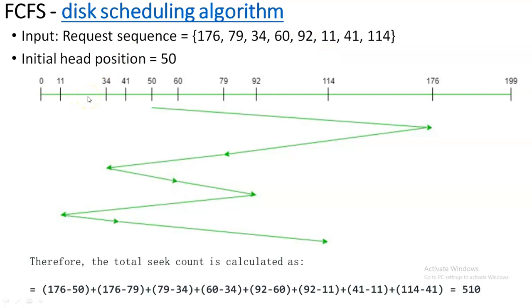So the smallest value is 11, then 34, 41, 50, 60, 79, 92, 114, and 176 — you write them accordingly on the scale. Now you are going to start traveling in the disk, as the arm rotates to read data. The initial point is already given, so you are going to start from 50. The algorithm is First Come First Serve, so you have to look at the request sequence — whichever number came first should be visited first.